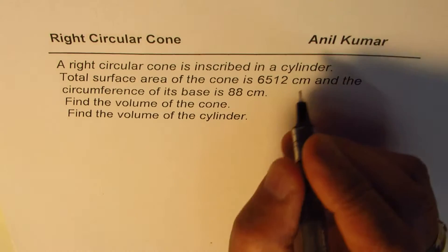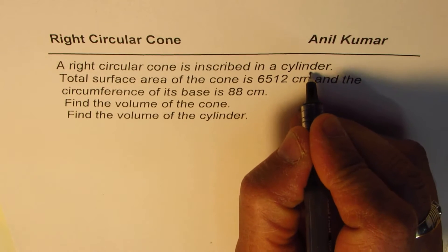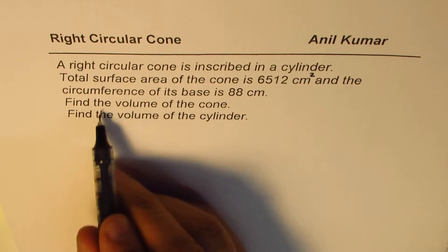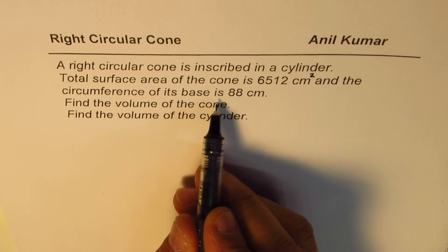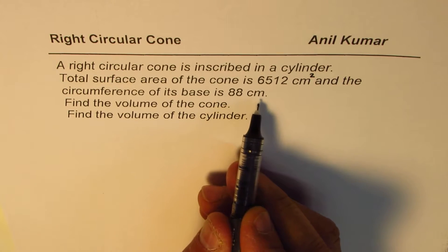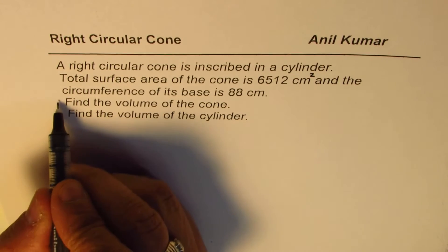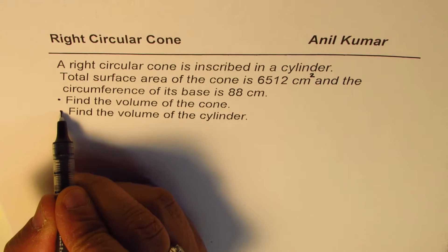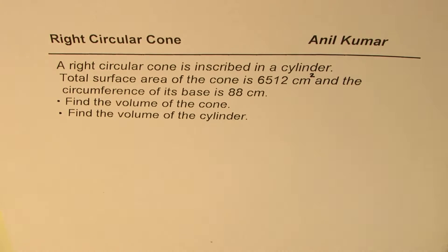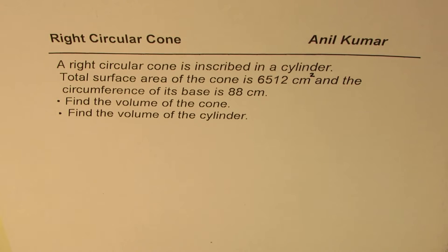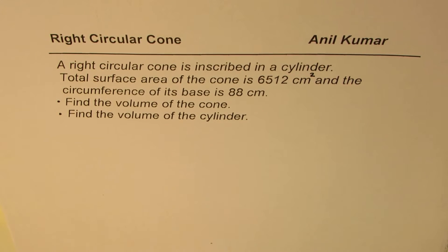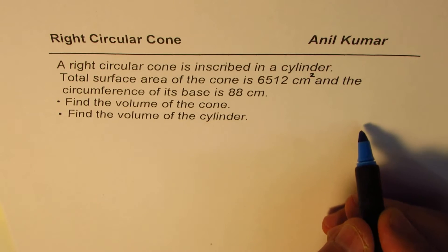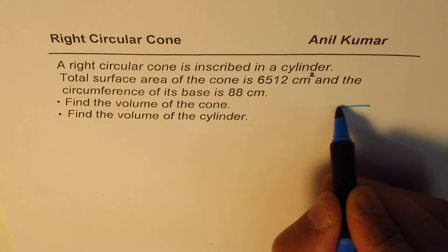Right, it should be square. And the circumference of its base is 88 centimeters. Find the volume of the cone and find the volume of the cylinder. That's the question for you — you can pause the video, answer the question, and then look into my suggestions. So let us first sketch it — let's say we have a cylinder here.